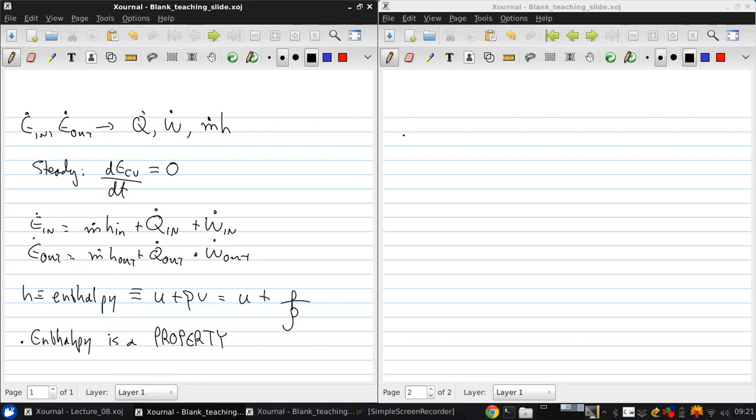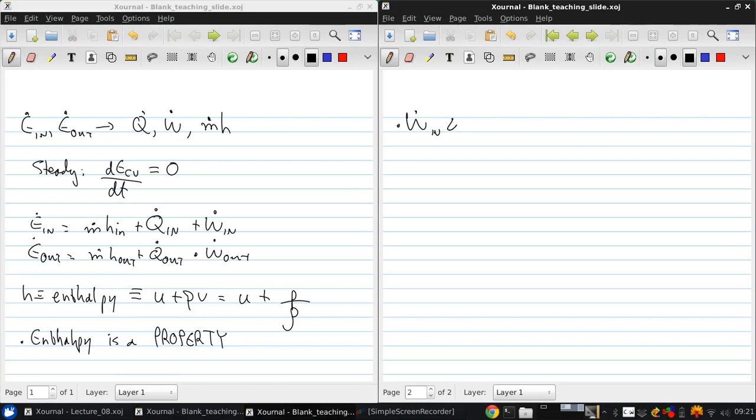Now, if we use enthalpy, then typically the work or power W in dot and W out dot are generally going to be in the form of shaft work. So this is work carried by a rotating shaft crossing the boundary of the control volume. The reason for this is that the other kind of work you could have is displacement type work. But for a fixed control volume, that typically doesn't come into play and is more often found when you use a control mass type approach for doing a first law analysis. And of course, Q in and Q out are the heat transfer rates in and out of the system.